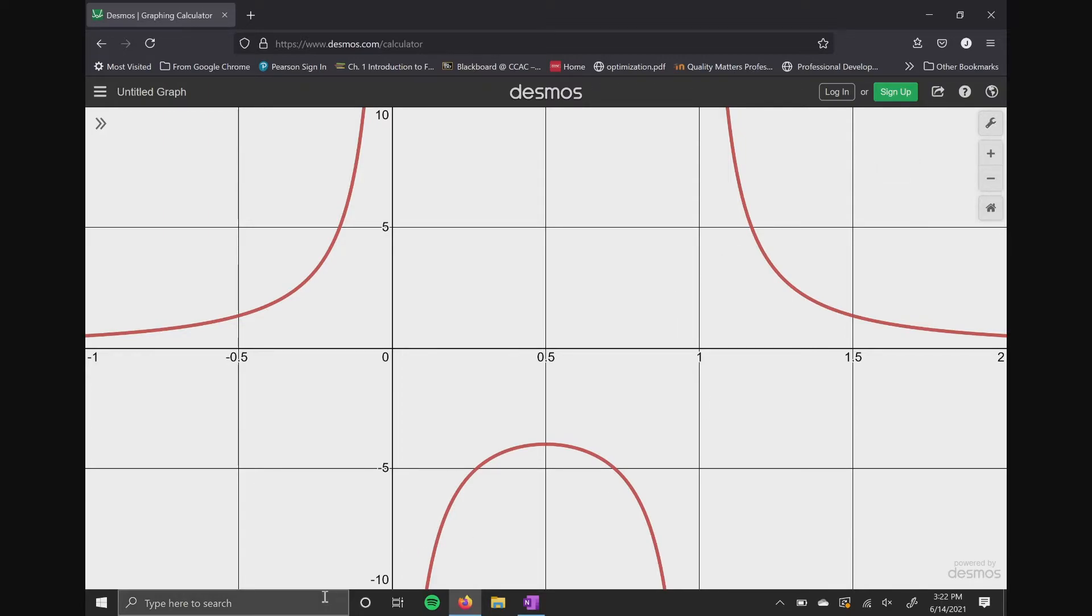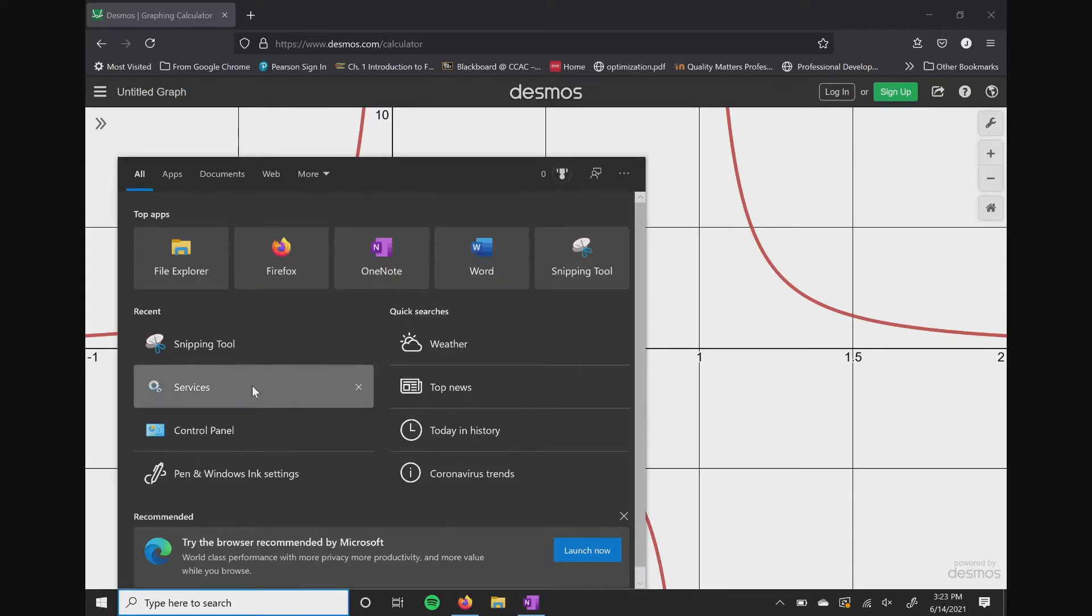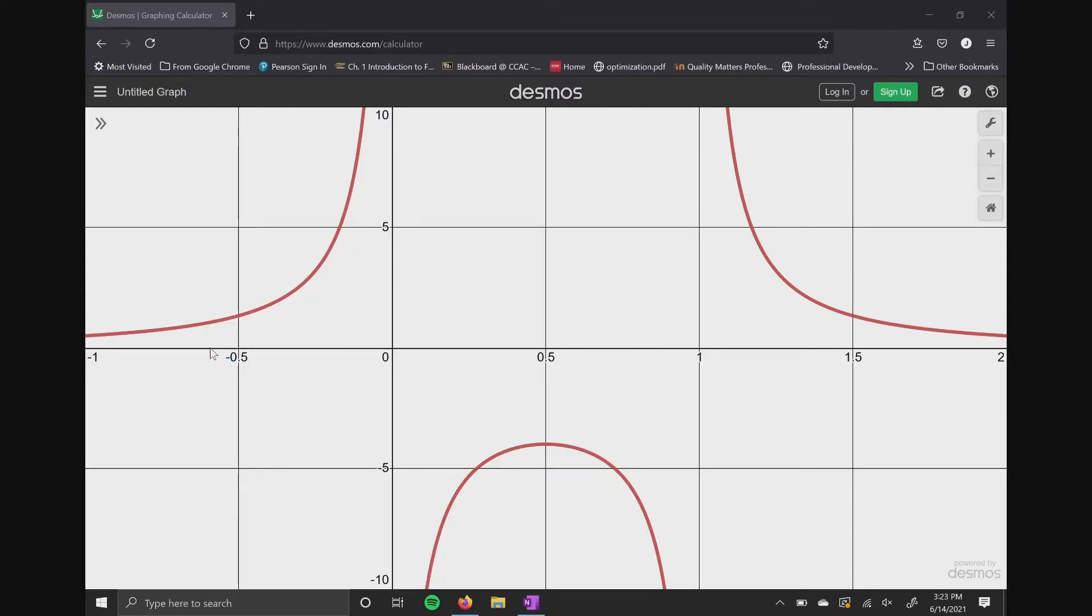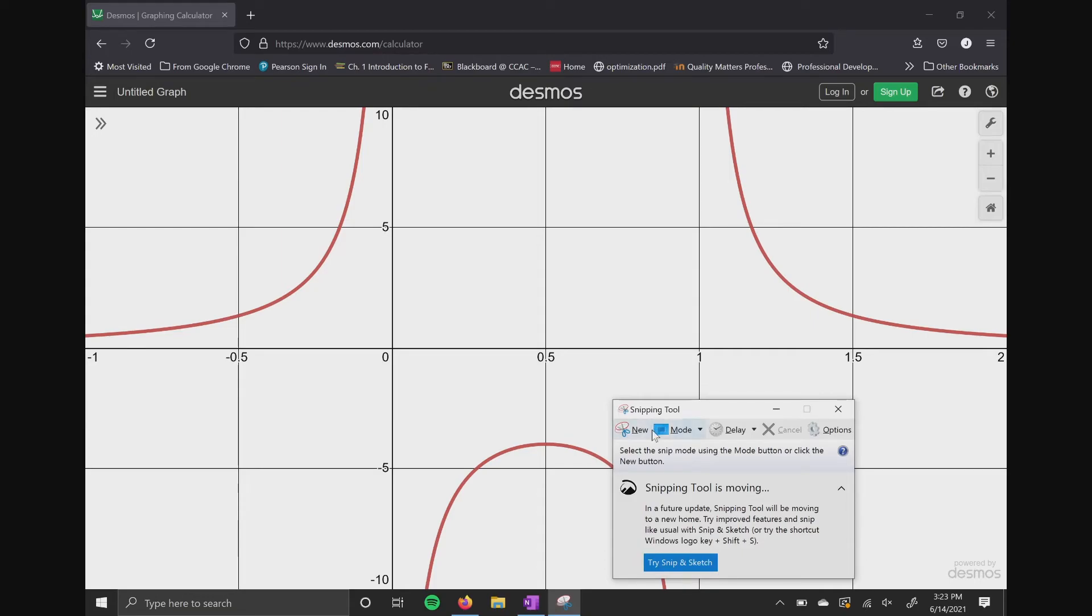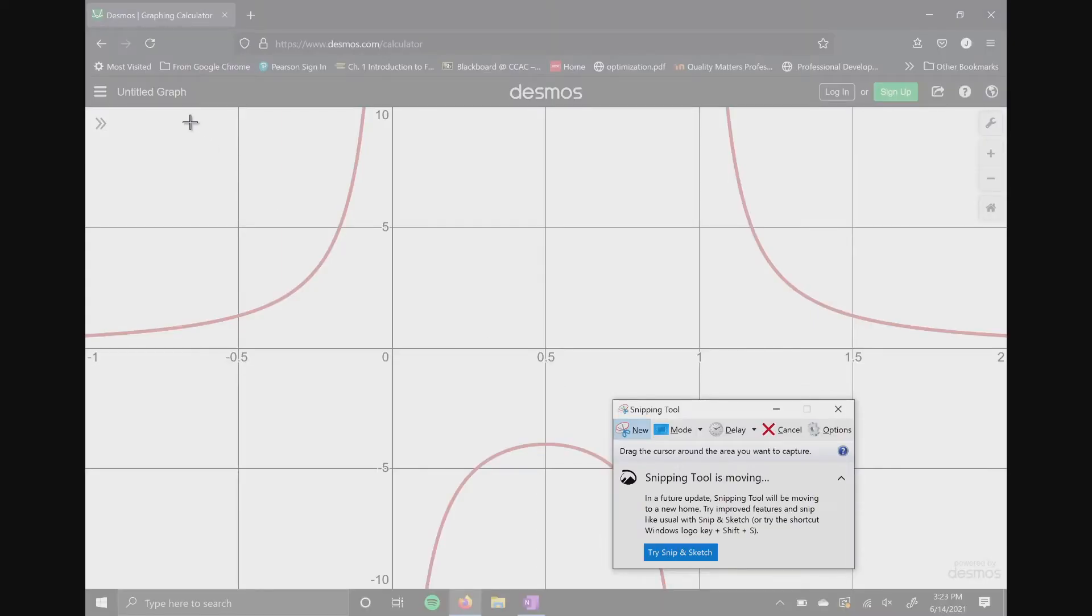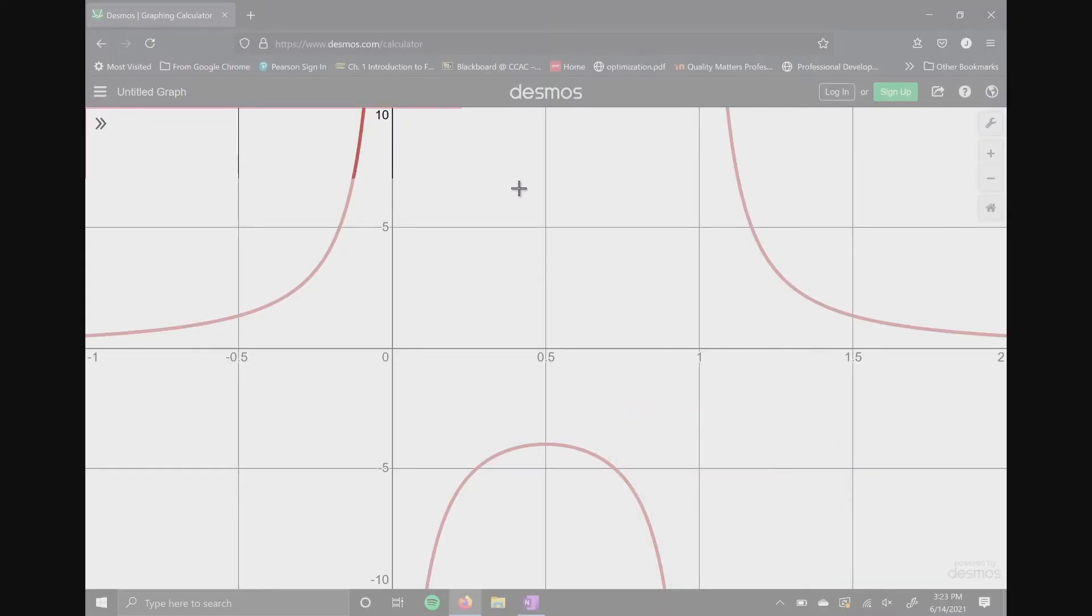What I'm gonna do is I'm just gonna bring this into our notes. So use the snipping tool, which can be found in Windows. If you have a Windows computer, if you have a Mac, I know there's a way to do it, I just don't know it.